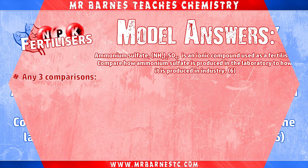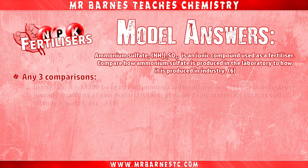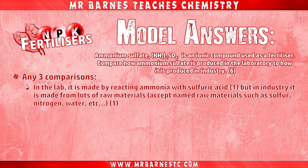Okay, let's go through. You have to compare how ammonium sulfate is produced in the lab to how it's produced in industry. You get one mark for how it's made in the lab and one mark for the comparison. The first mark is for saying that in the lab it's made by reacting ammonia with sulfuric acid.